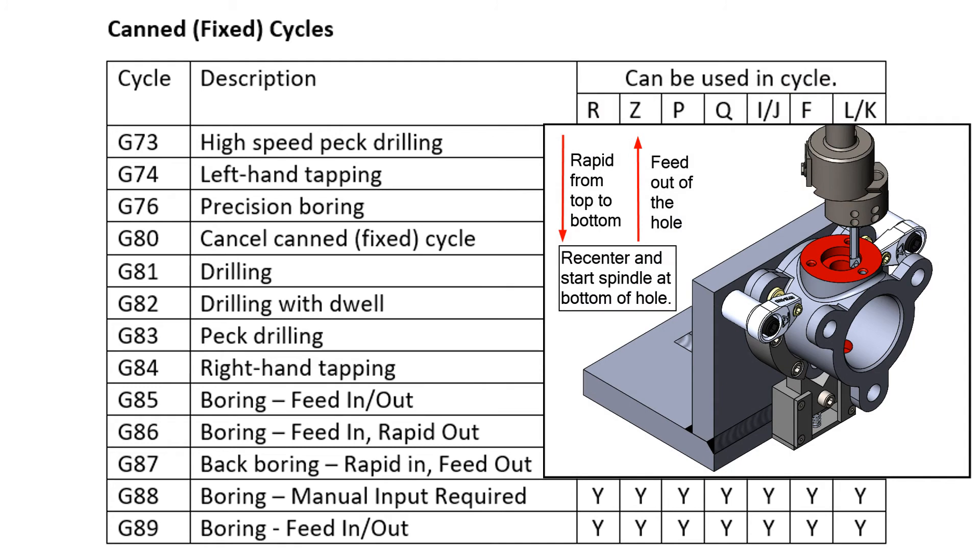G87, also known as the back boring cycle, will rapid the tool to the bottom of the hole with the spindle stopped and oriented off-center by the Q or I and J amount. It will then recenter the tool on the hole, start the spindle, and feed out of the hole. This has the advantage that all of the chips fall below the tool as they are created and should not interfere with the cutting or the surface finish.